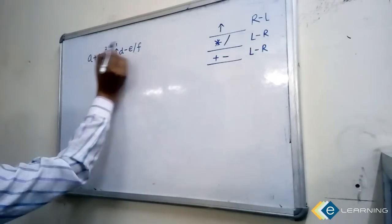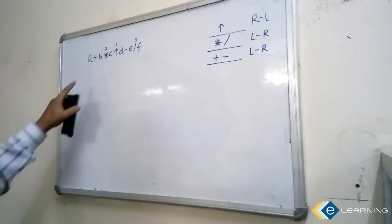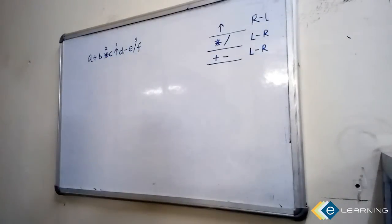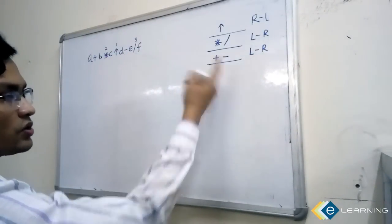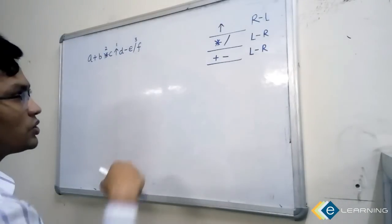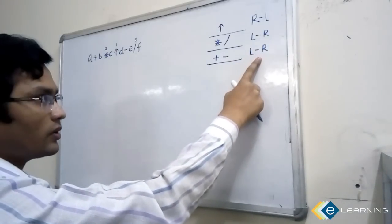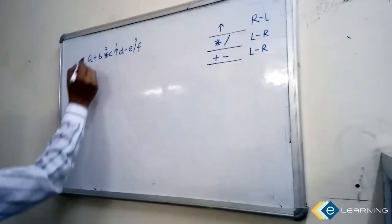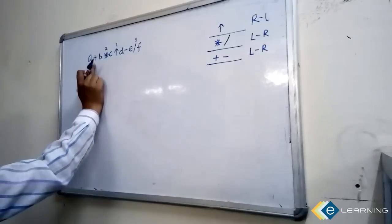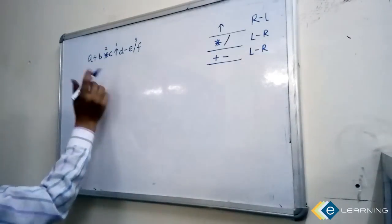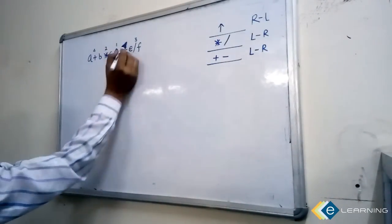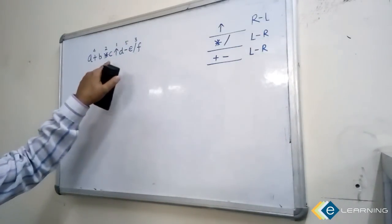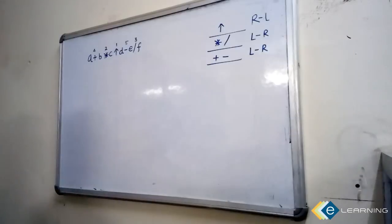Now the remaining operators are plus and minus, which have the same precedence. Associativity says left to right, so going left to right, plus comes before minus. Therefore plus gets the fourth position and minus gets the fifth position. After numbering all the operators according to their precedence, find which operator evaluates last.